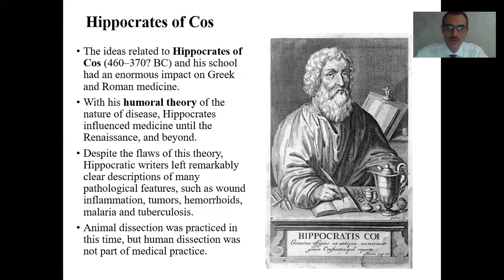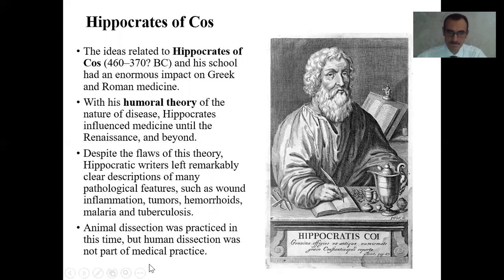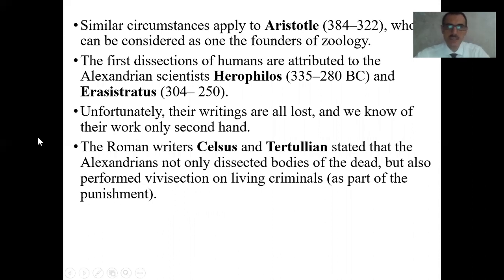Despite the flaws of this theory, Hippocratic writers left remarkably clear descriptions of many pathological features such as wound inflammation, tumors, hemorrhoids, malaria, and tuberculosis. Animal dissection was practiced at this time, but human dissection was not part of medical practice. This applies to Aristotle, who can be considered as one of the founders of zoology. The first dissections of humans are attributed to the Alexandrian scientists Herophilus and Erasistratus. Unfortunately, their writings are all lost and we know of their work only secondhand.